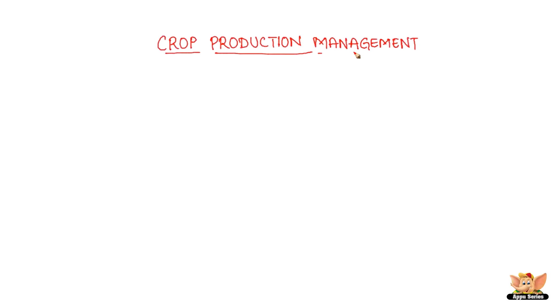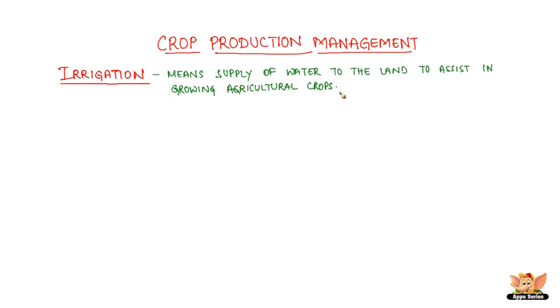Crop Production Management. Irrigation is another activity under crop production management. It means the supply of water to the land to assist in growing agricultural crops.